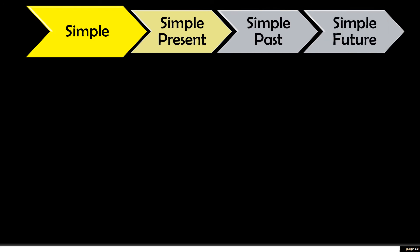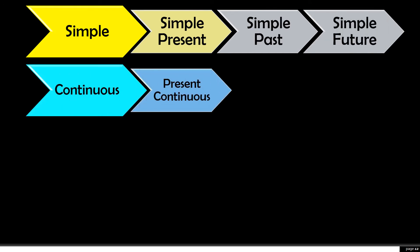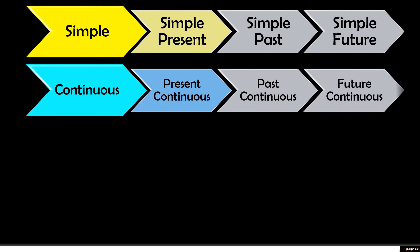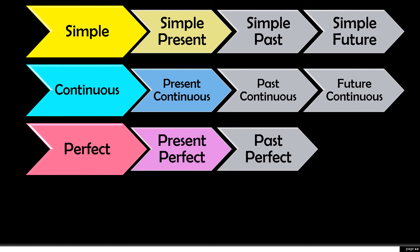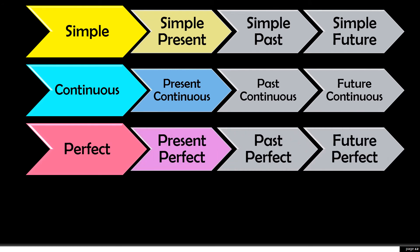Now what are they? Let us see. They are: simple present tense, simple past tense, simple future tense; present continuous tense, past continuous tense, future continuous tense; then present perfect tense, past perfect tense, future perfect tense.